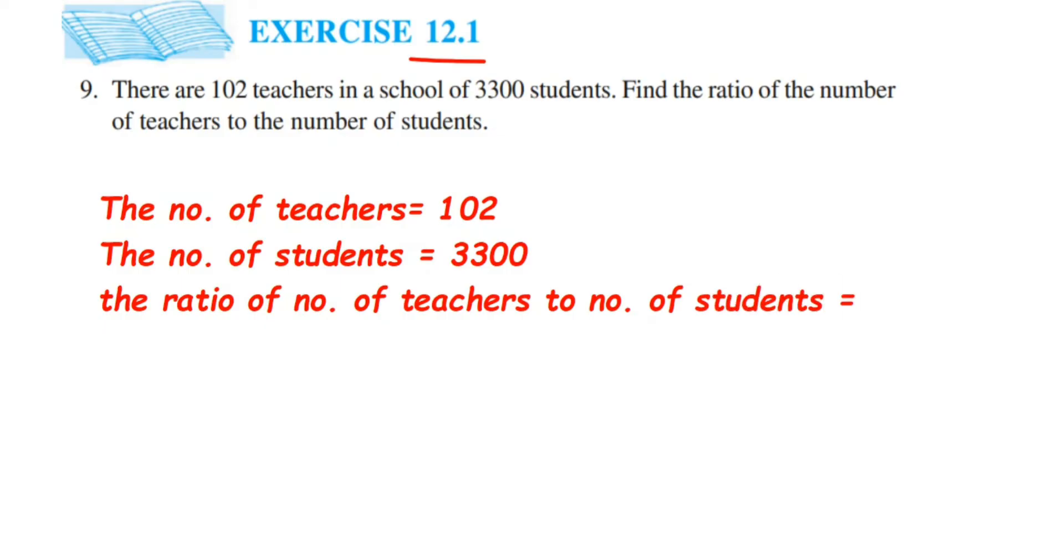Now first talking about the teachers, right? So teachers are here 102. So this will be equal to... Let me write down this in the next step. So this is 102 is to number of students which are 3300.